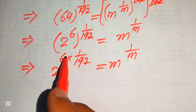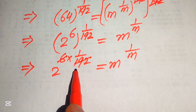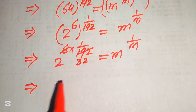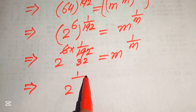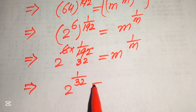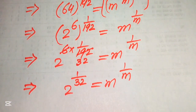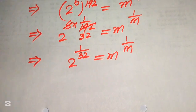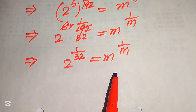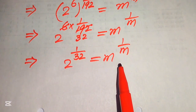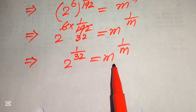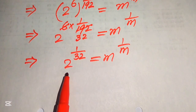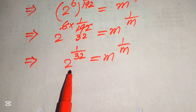When we simplify, 6 divided by 192 reduces to 1 over 32, so on the left hand side we get 2 to the power of 1 over 32, equals m to the power of 1 over m. Now, focusing on the right hand side, we see that the exponent is the reciprocal of its base. So we need to create this same condition on the left hand side.